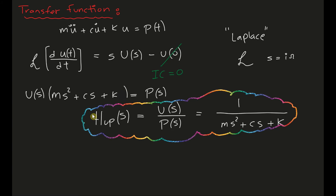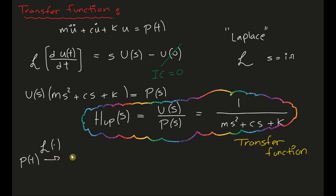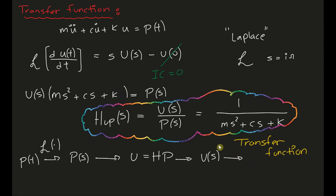I'll explain how a transfer function is different from a frequency response function. Anytime you want to work in the Laplace domain, you take your input excitation, do a Laplace transform to get the Laplace version of that excitation, then apply the dynamical process h times p to get U — which is in Laplace — and finally do an inverse Laplace to get the time domain result. This is much more mathematically efficient.